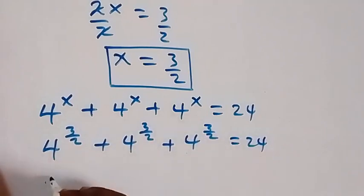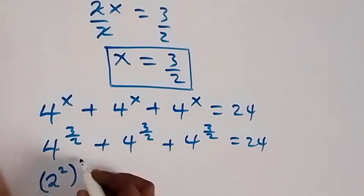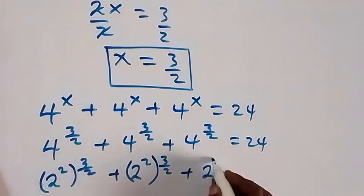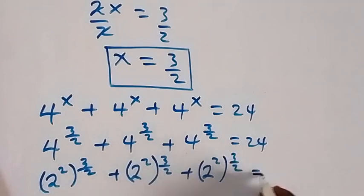Then this gives us (2^2)^(3/2) + (2^2)^(3/2) + (2^2)^(3/2) = 24. From here, since the powers multiply, we have 2^3.